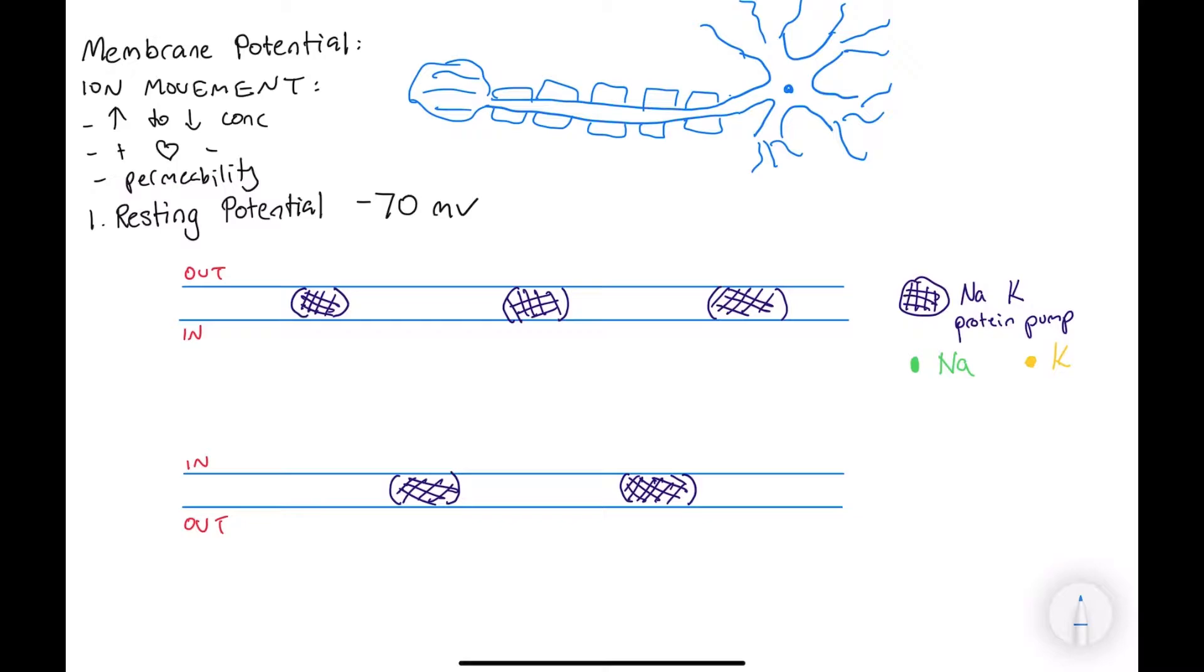So, the membrane potential and the nerve impulses, we are interested in looking at the axon of the neurons, that's what we're looking at over here. So, the resting potential is basically when the neuron is not firing an impulse. And it's important to note that the overall charge is negative 70 millivolts.